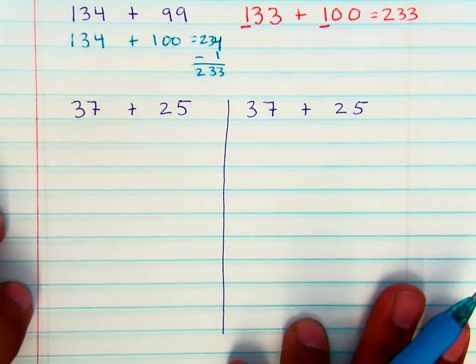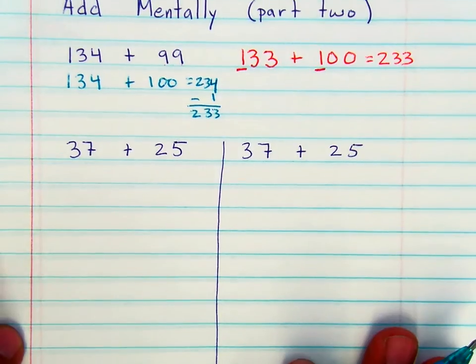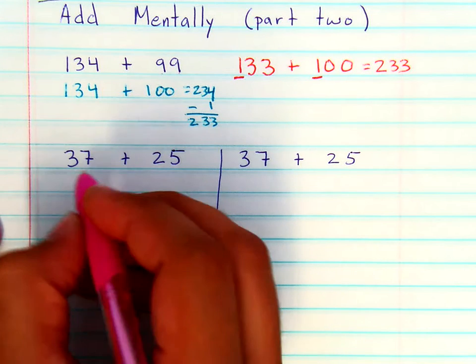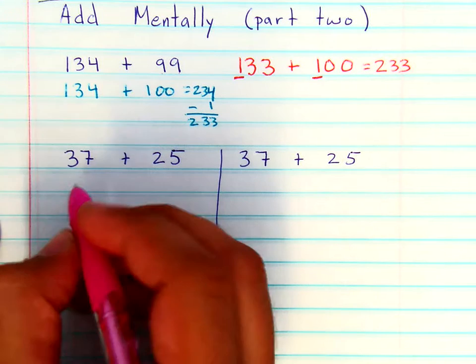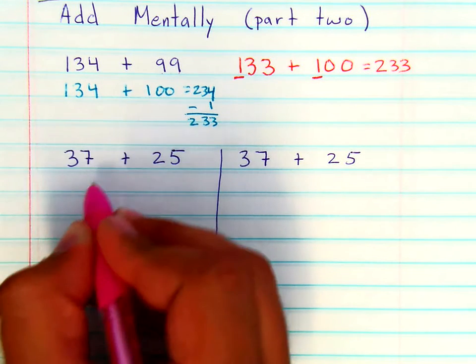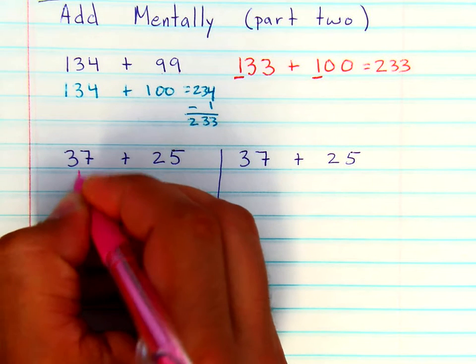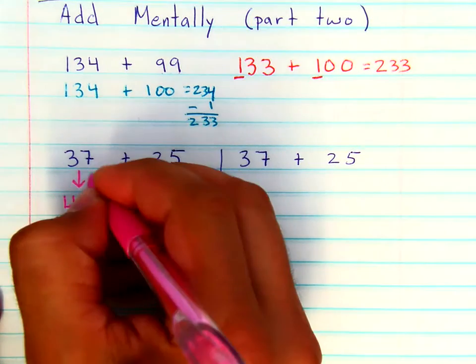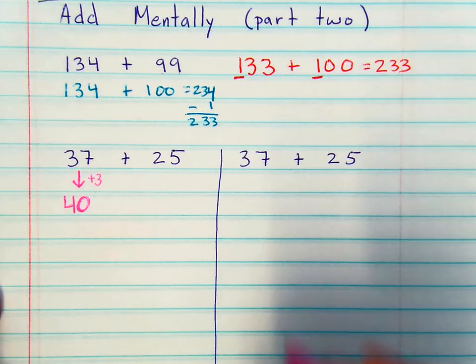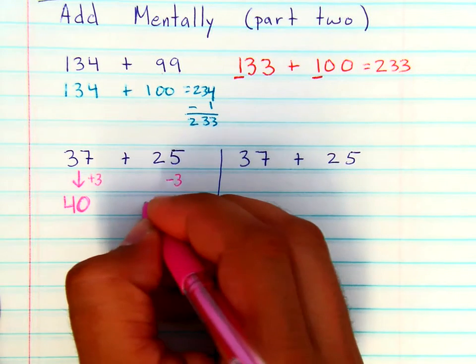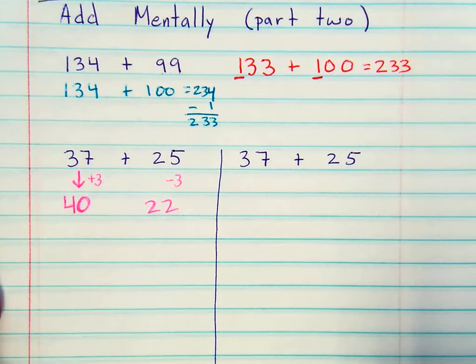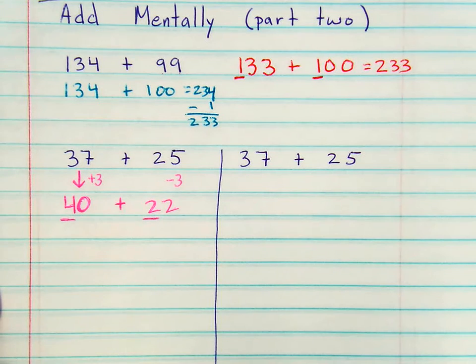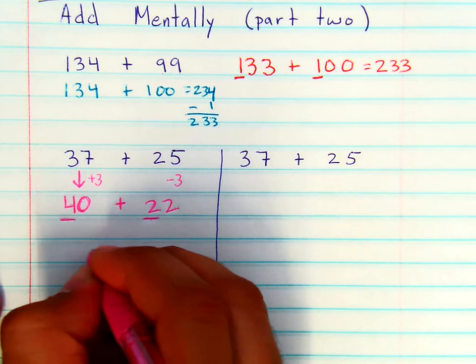Now there's another way that you can use that same strategy. If you have 37 and 25 and you want to get one of these numbers to the closest 10, if you change 37 to 40, you've added 3 numbers. If you take 3 away from this side and you have 22, it's easier to only add the tens place and get 40 and 20 being 60 plus 2.